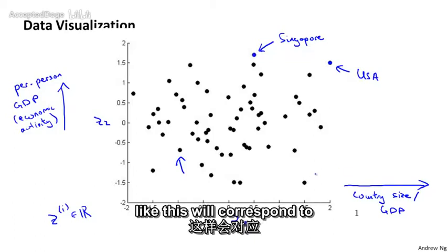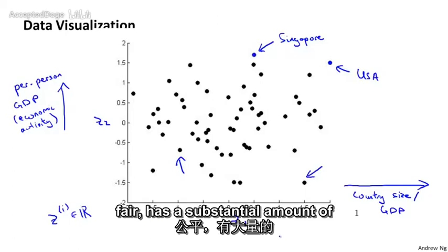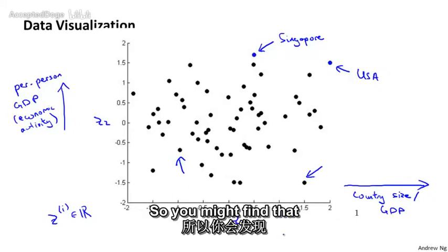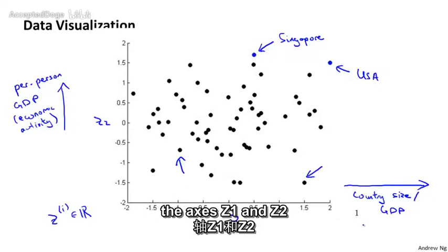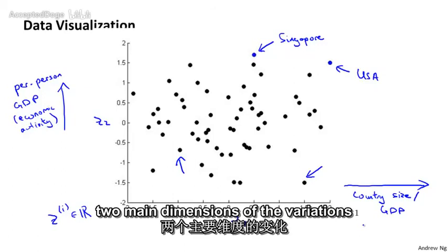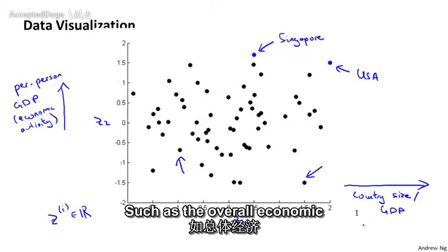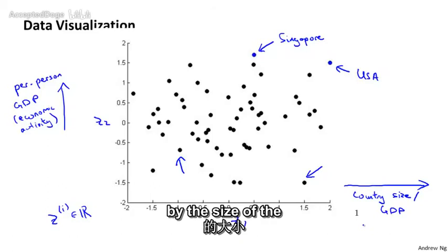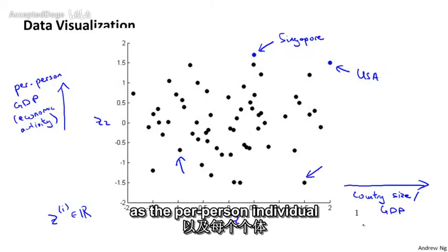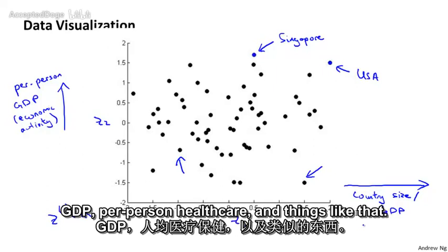Whereas a point like this would correspond to a country that has a substantial amount of economic activity, but where individuals tend to be somewhat less well-off. So you might find that the axes z1 and z2 can help you to most succinctly capture really what are the two main dimensions of variation amongst different countries, such as the overall economic activity of a country reflected by the size of the country's overall economy, as well as the per person individual well-being measured by per person GDP, per person healthcare, and things like that.